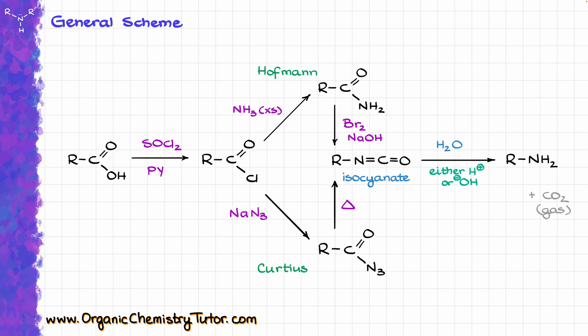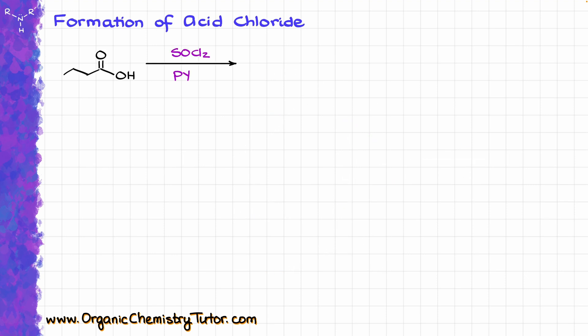Since we have quite a few moving parts in this scheme, let's look at each reaction individually. First, I want to start with the formation of the acid chloride. While there are many different ways to make acid chlorides, the method with thionyl chloride, SOCl2, is probably the most common one.